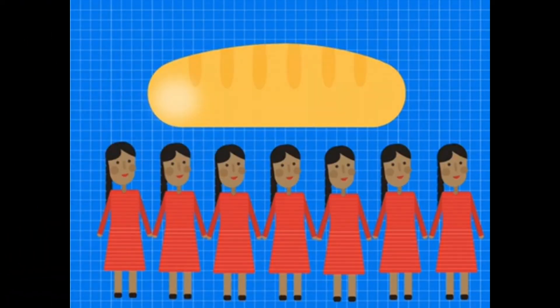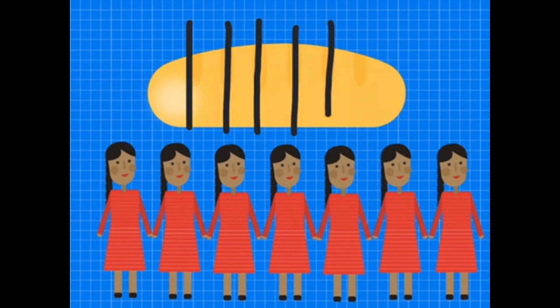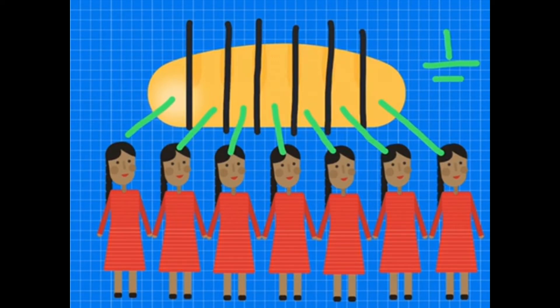Here we see seven very hungry girls and only one loaf of bread. So they're going to need to share this loaf of bread. So the only way that they can do that is by using fractions. So we're going to go ahead and split this loaf of bread up into seven equal pieces. That means that each girl will get one-seventh of this loaf of bread. So that means that we will write the fraction as one out of seven.